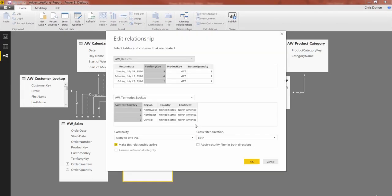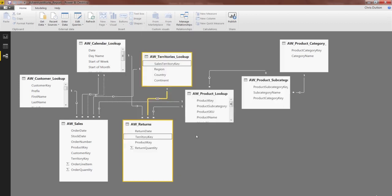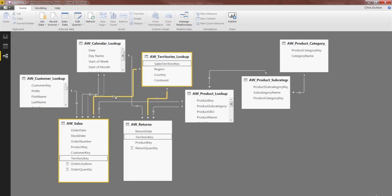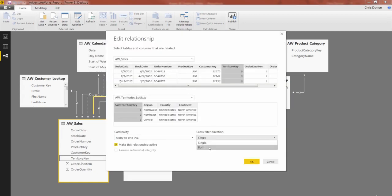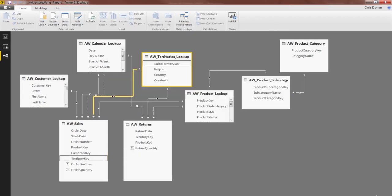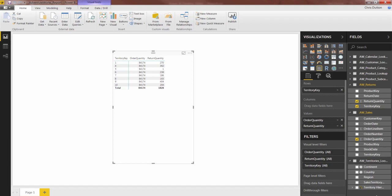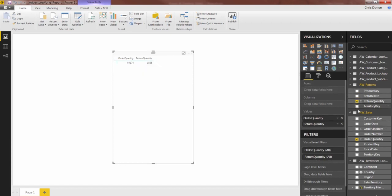So now let's go back to Relationships. I'm going to double-click that same relationship, change it back to single, press OK. And I'm going to find the relationship from sales to territories. There it is. I'm going to make this one bidirectional. Press OK. Head back to report.